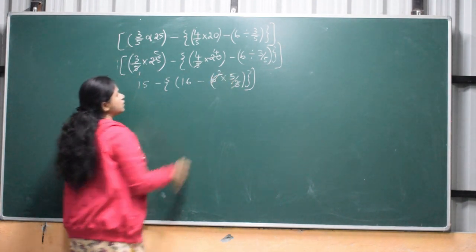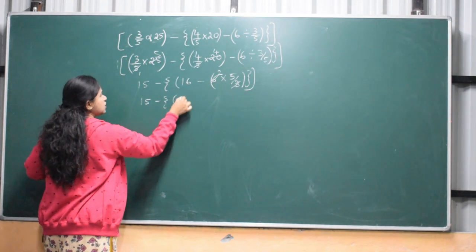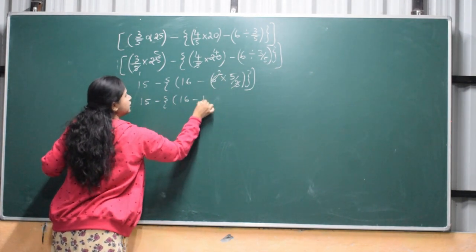3 to 2. You need to divide: 15 minus - here is 16 minus 2 - 5 is 10.